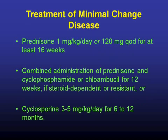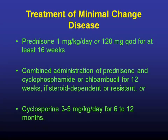The treatment of minimal change disease is similar in adults as it is in children. The first-line treatment is prednisone, one milligram per kilogram per day or 120 milligrams every other day, for at least 16 weeks before changing therapy. If someone is not responsive to steroids, or they become steroid dependent or resistant, you can use either combined cytotoxic agents — usually cyclophosphamide — with prednisone, or cyclosporine as an alternative.